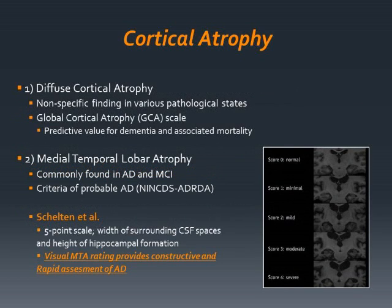Diffuse cortical atrophy is a common finding in various pathological statuses, such as stroke, radiation treatment, and neurodegenerative disorders, as well as in normal aging. The global cortical atrophy scale was first introduced as a tool to quantify this kind of atrophy in stroke patients with or without dementia. Even if it has predictive value for dementia and associated mortality, it is more likely to be confounded by age than other atrophy scales as it covers large brain areas.